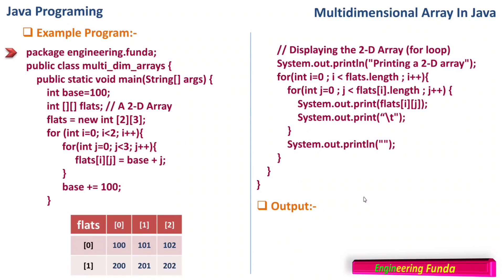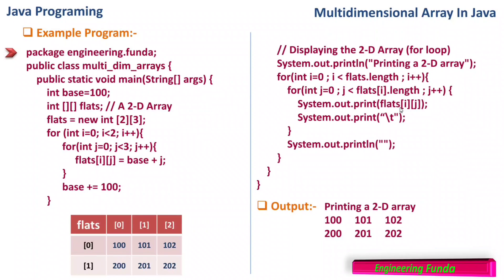The output shows the 2D array: first row prints 100, 101, 102, and the second row prints 200, 201, 202. I hope this is very much clear, my dear friends, because the concept of arrays and multi-dimensional arrays is very useful in Java programming. Stay tuned for more videos on Java programming on the channel Engineering Funda.